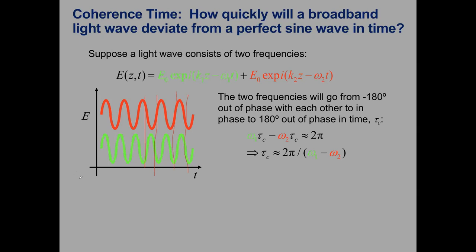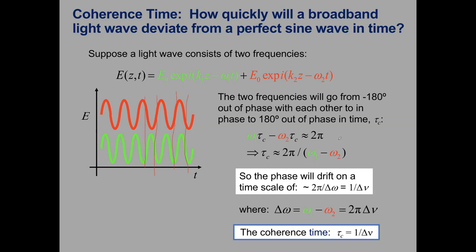How quickly does the amplitude change? With a wave made of two different frequencies, we can estimate how long it takes to go from constructive to destructive interference — it's how long the two waves take to go out of phase. We take the phases of the two waves, subtract them, and when that difference equals 2π, that gives us the time for the waves to go from constructively to destructively interfering and back again.